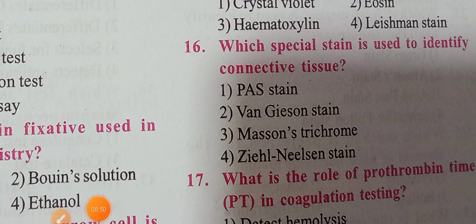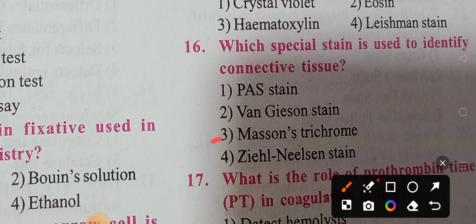Next question: which special stain is used to identify connective tissue? The options include PAS stain, van Gieson stain, and Masson trichrome. Option three, Masson trichrome, is the correct answer — this special stain is used to identify connective tissue.